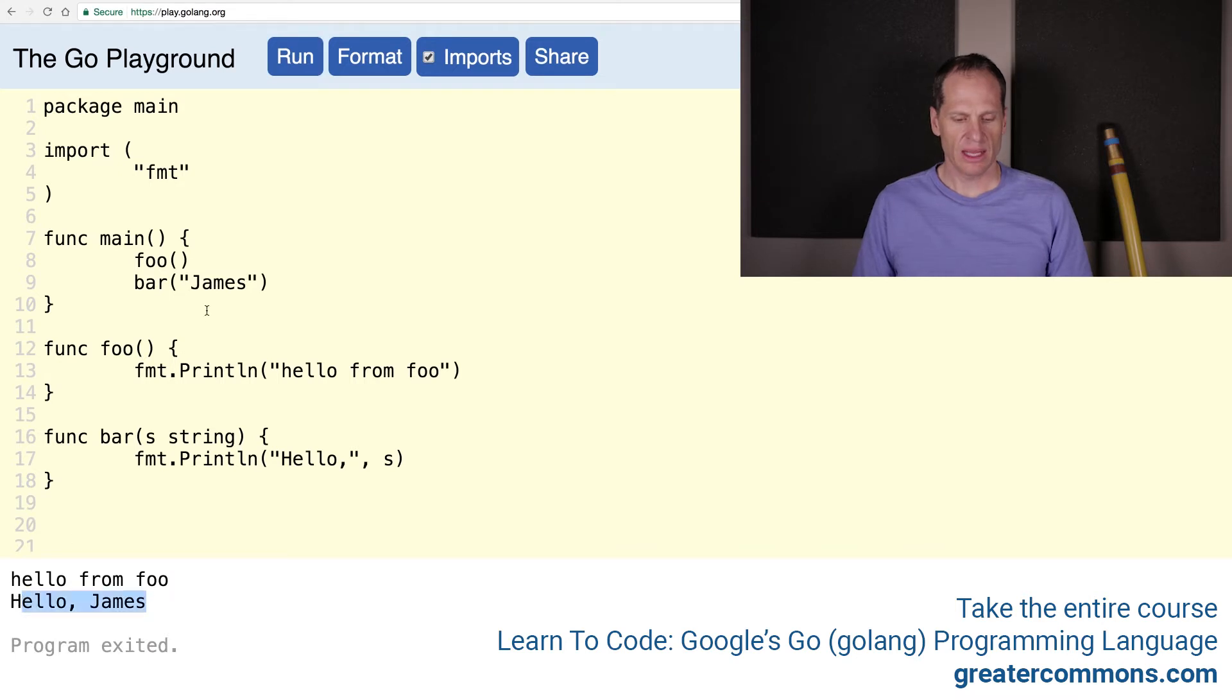Hello James, right. So this string got passed in to this function as an argument. This function is defined with a string as a parameter. Pass in an argument which is a string, and then that gets assigned to the variable s. And s prints out the value of s right there.